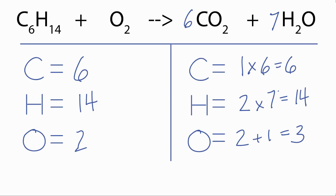So we're almost there. Let's recalculate the number of oxygens on the product side. We have six times two, that's 12. And seven times the one, total of 19 oxygens.